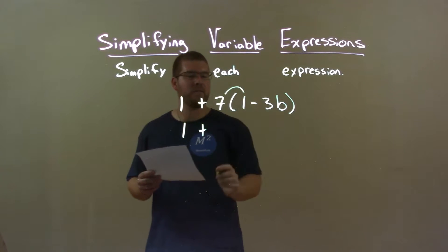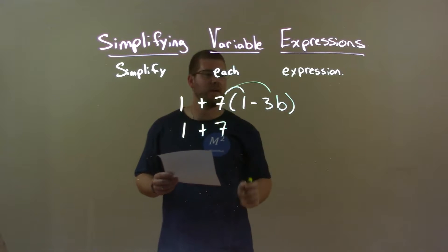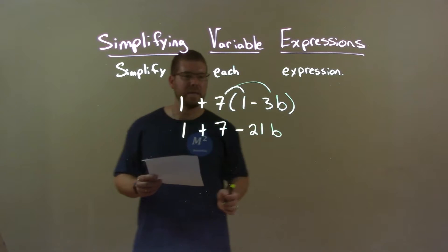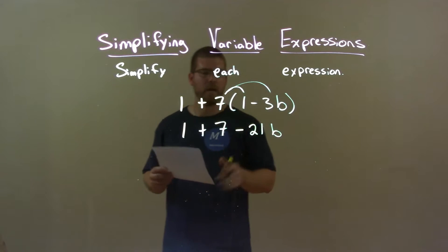So 1 comes down plus 7 times 1 is 7 and 7 times a negative 3b is a negative 21b. 7 times 3 is 21, keep the subtraction sign.